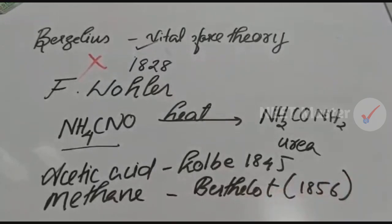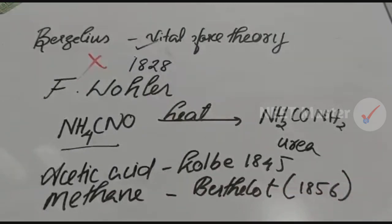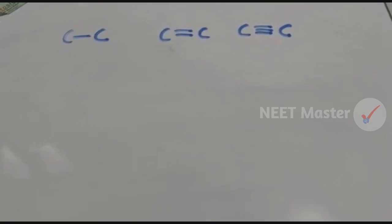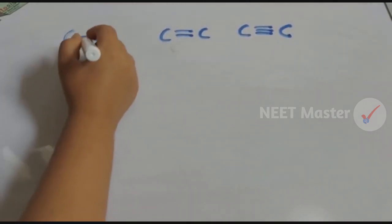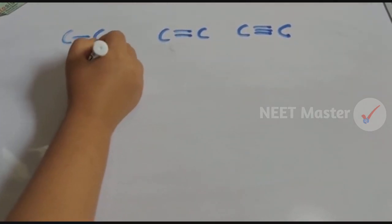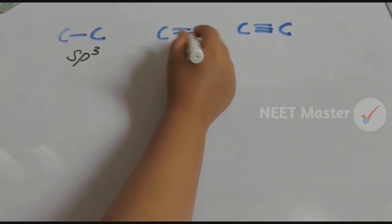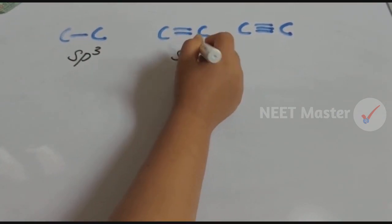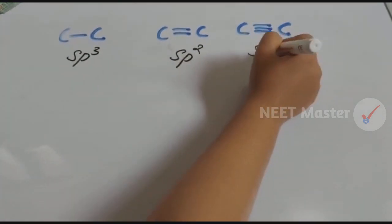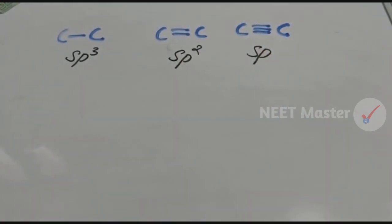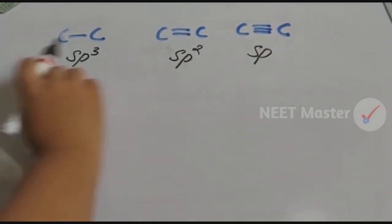Now let's discuss hybridization. For a C–C single bond, the hybridization is SP3. For a double bond, it is SP2 hybridization. For a triple bond, it is SP hybridization. You can see these three types.